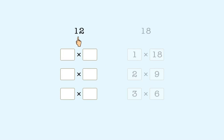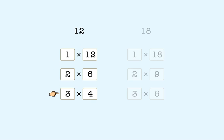Let's look at the factors of 12. The factors of 12 are 1 and 12, 2 and 6, and 3 and 4. The greatest common factor is the largest number that is a factor of both 12 and 18. 6 is the largest number that is a factor of both 12 and 18, so 6 is the greatest common factor.